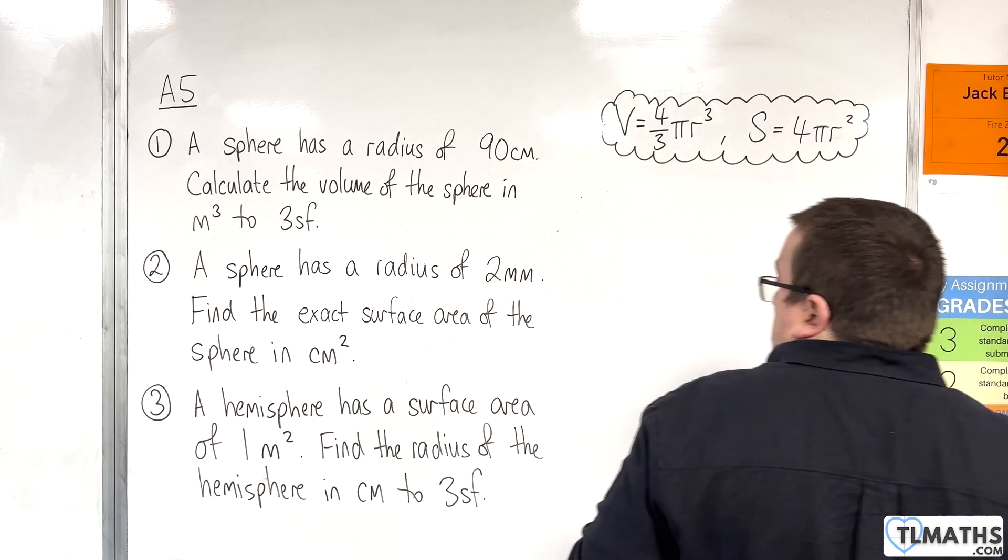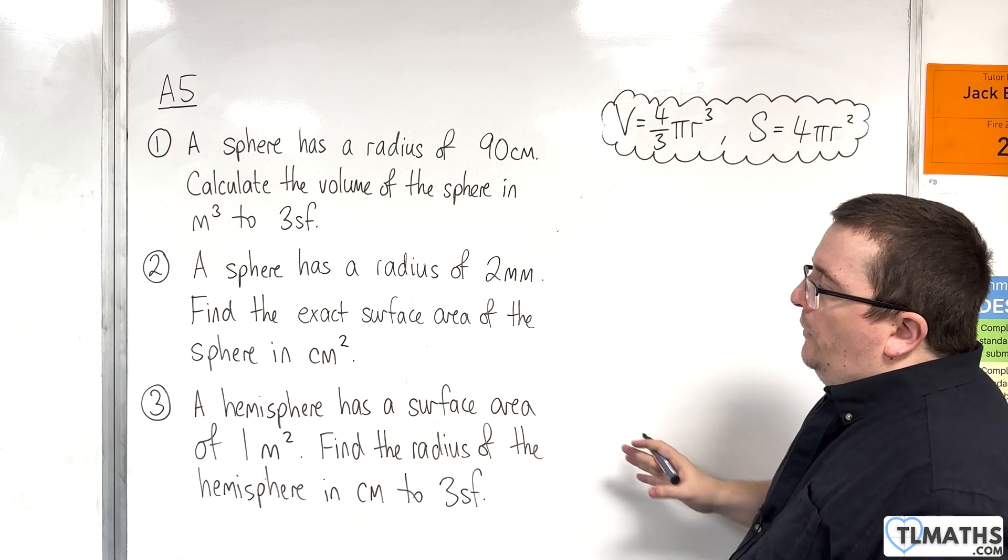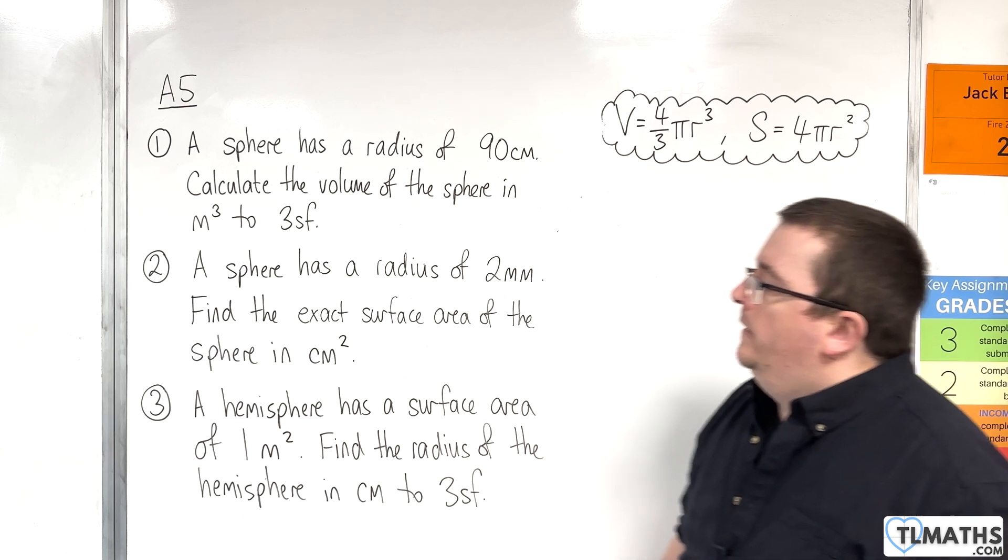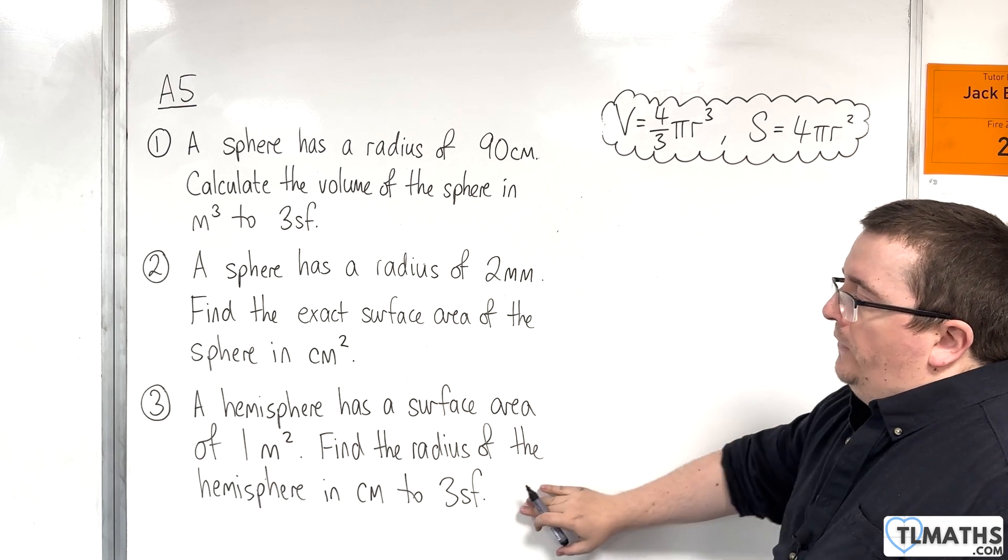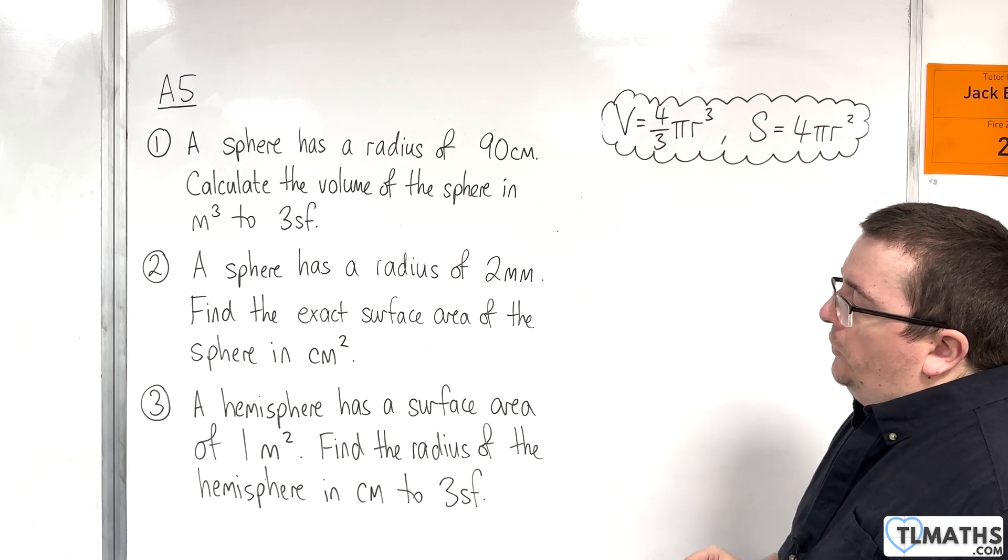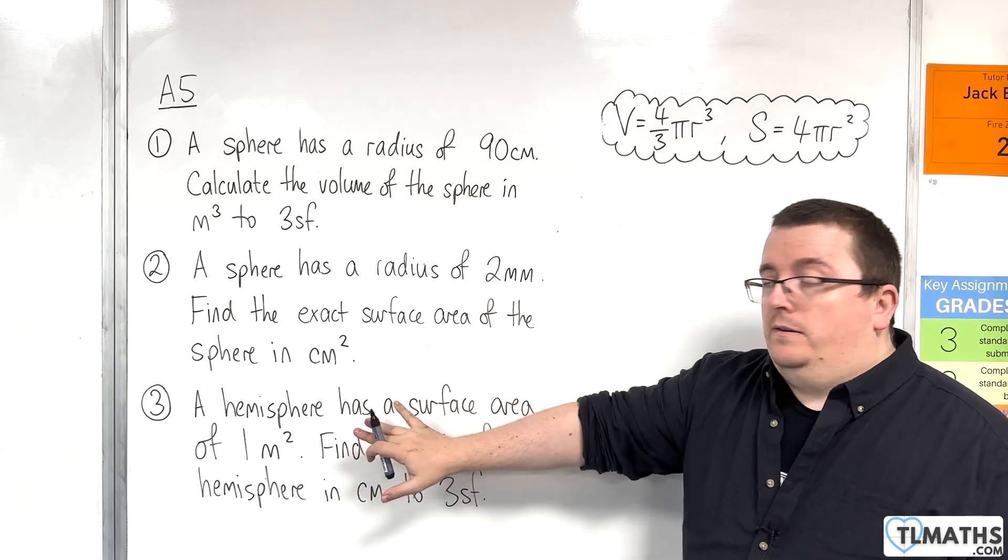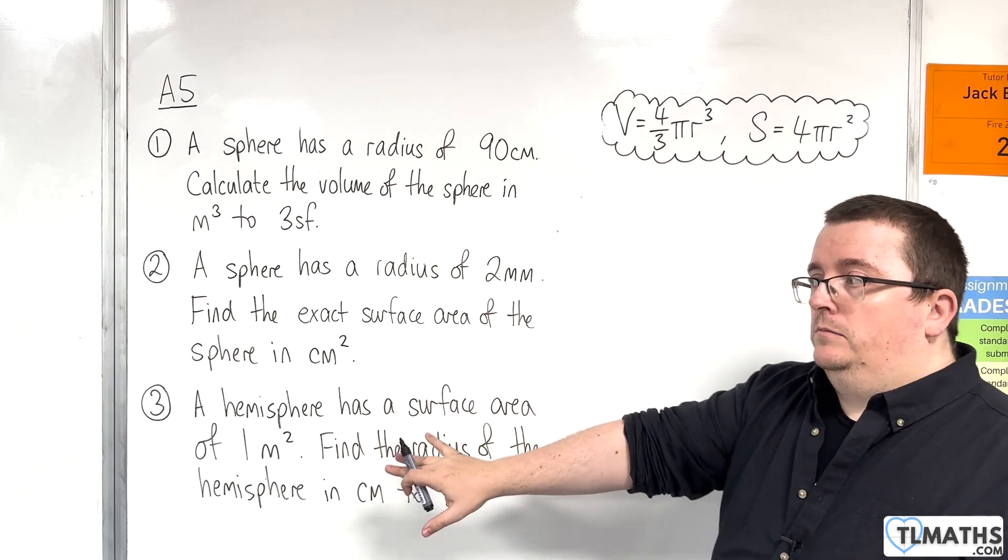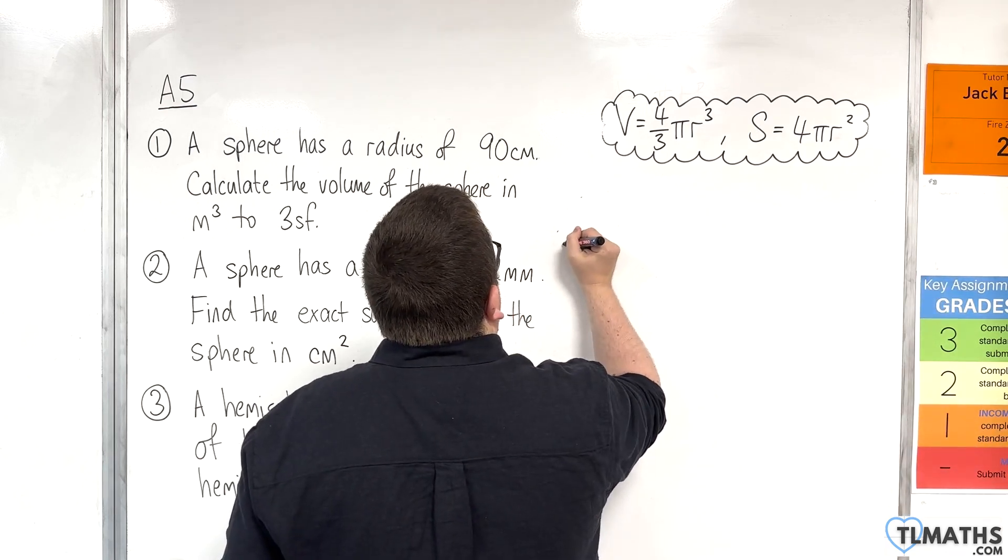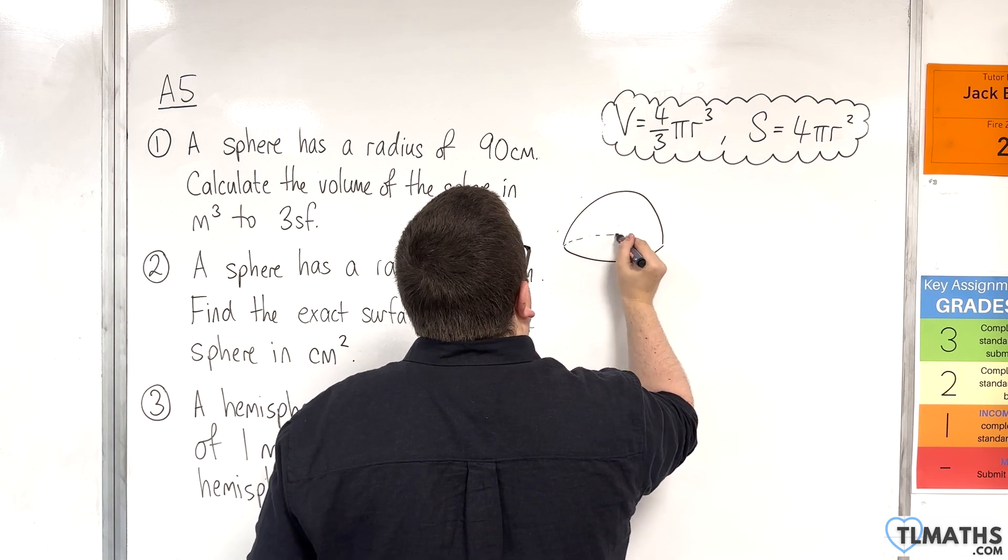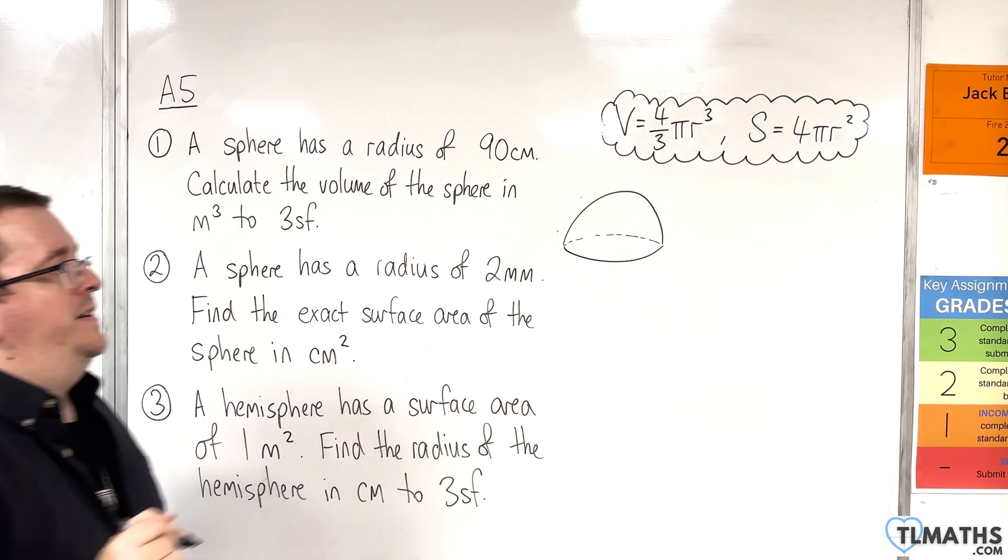Right, number three. A hemisphere has a surface area of one square meter. Find the radius of the hemisphere in centimeters to three significant figures. So a hemisphere is half a sphere. OK, so it looks like this. Kind of like a snow globe kind of idea here.